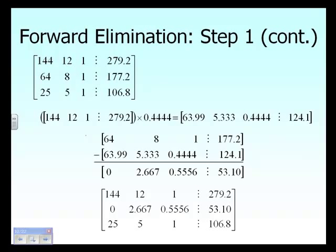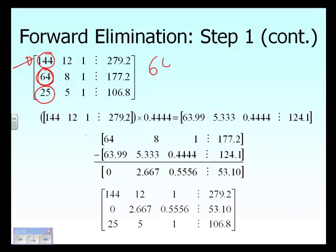After the switch, the first step of forward elimination is exactly the same as the Naive Gauss elimination method. In the first step of forward elimination, we need to make two elements zero using the first row. We take 64 divided by 144, which gives 0.4444, and that is our multiplier.